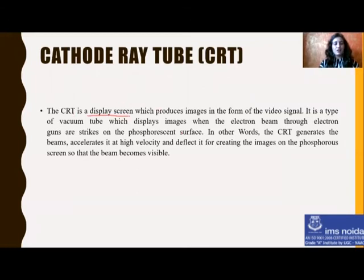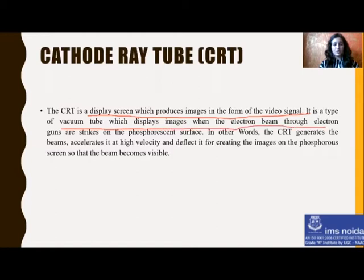CRT is a display screen which produces images in the form of video signals. CRT is a cathode ray tube mostly used in televisions or monitor screens. Basically, CRT is a display screen where we can produce images with the help of pixels. In the previous video, we have already discussed about the frame buffer, which is used to store the picture definition — store the value of the pixel in the form of 0 and 1. So, what is CRT? CRT is a type of vacuum tube which displays images when the electron beam through the electron gun strikes on the phosphor surface.